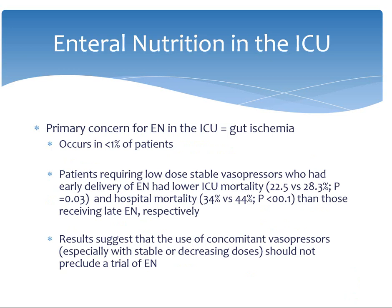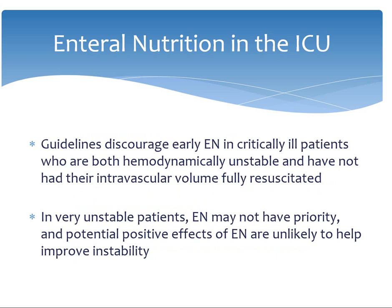One of the major concerns for initiating early enteral nutrition is gut ischemia. This is a very rare occurrence, occurring in approximately less than one percent of patients; however, it is still feared in the ICU setting. Per ASPEN guidelines — the American Society for Parenteral and Enteral Nutrition — the use of stable vasopressors should not preclude a trial of enteral nutrition. Enteral nutrition may be provided with caution to patients on stable low doses of vasopressors whose MAPs are greater than 50.